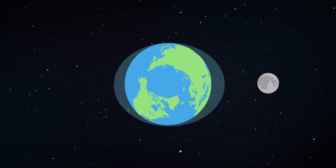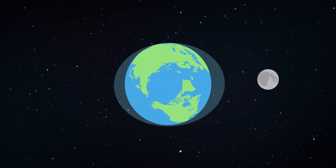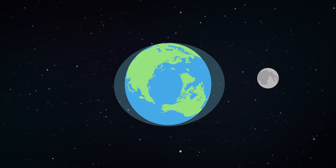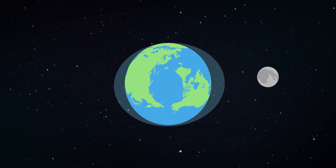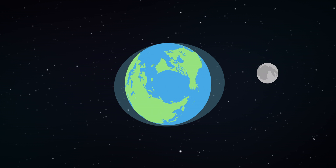A tidal cycle is not exactly equal to one day. The Moon also moves around the Earth, which results in the tidal cycle lasting a little bit longer than a day. A tidal cycle is 24 hours and 50 minutes long. This means that each high tide is 50 minutes later than it was the previous day.